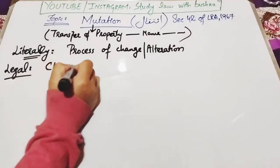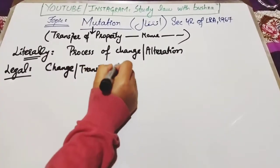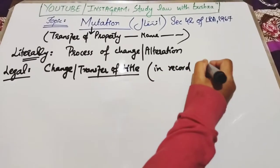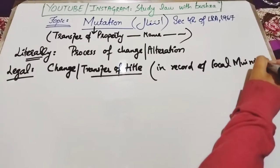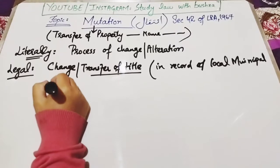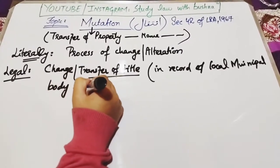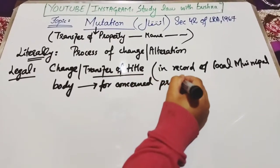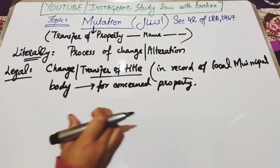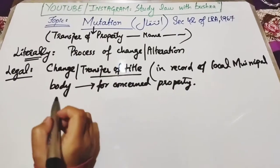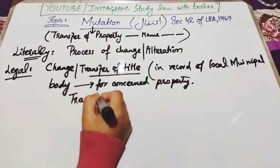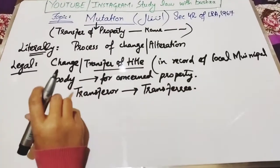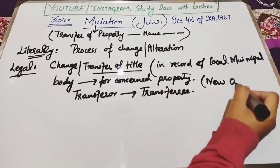Legally, mutation means change or transfer of title in the record of the local municipal body for the concerned property. Yaani ke local municipal body ke record mein ek bande se doosre bande ko title transfer hota hai. Simply, from transferor to transferee — seller se buyer ko jo property transfer hogi, usko hum kehte hain mutation. As soon as the change of title appears in the record, the new owner gets the property in his own name.